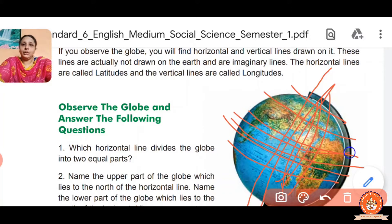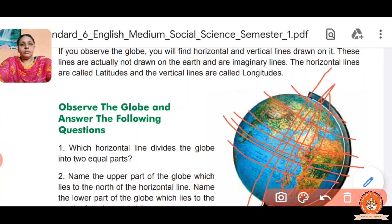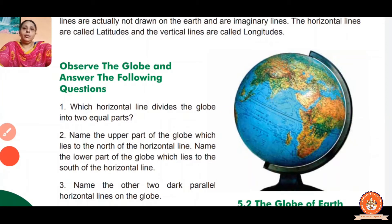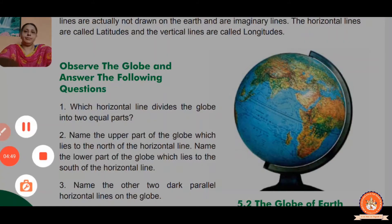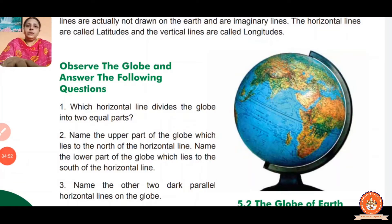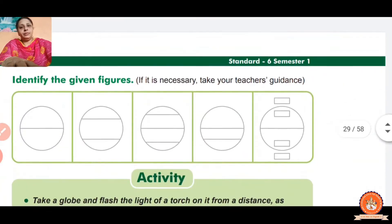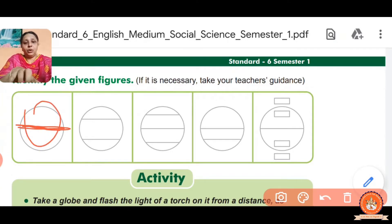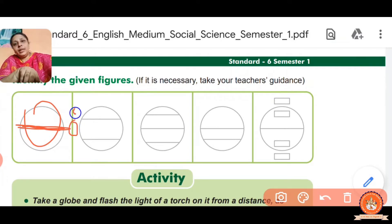Horizontal lines are called latitude and vertical lines are called longitude. Observe the globe and answer the following question: which horizontal line divides the globe into two equal parts? The equal line dividing the globe is called the equator. The equator is the middle part, at zero degrees.